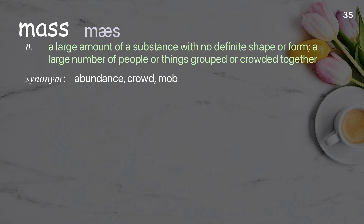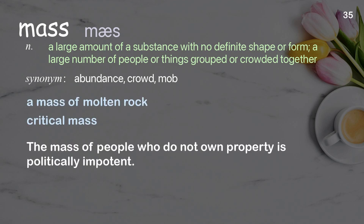Mass: a large amount of a substance with no definite shape or form; a large number of people or things grouped or crowded together. Examples: a mass of molten rock, critical mass. The mass of people who do not own property is politically impotent.